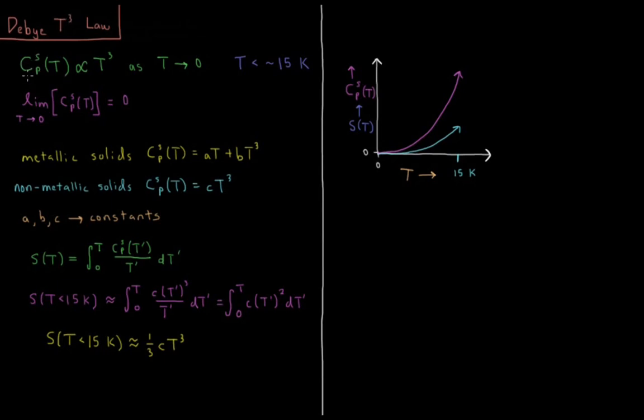The Debye T cubed law says that the constant pressure heat capacity of a solid is going to be proportional to the cube of the temperature as the temperature approaches zero. This really comes into play below about 15 Kelvin where a lot of the high temperature approximations that we've been making in our statistical mechanics chapter for various partition functions and properties start to break down as you get to very low temperatures with very few occupied states.